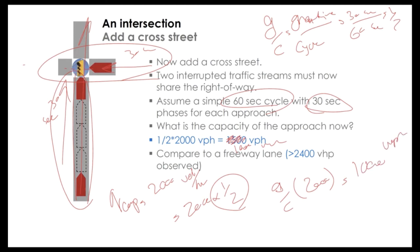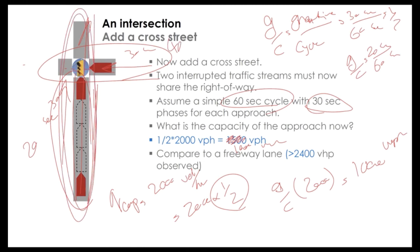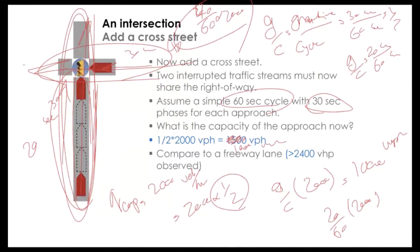Adding a simple traffic signal reduces road capacity by half. If the green-to-cycle ratio (g/c) were different — say 20 seconds green out of 60-second cycle — capacity would be (20/60) × 2,000 for that approach, and the other approach would get (40/60) × 2,000. The capacity of each approach depends on how much green time it receives.